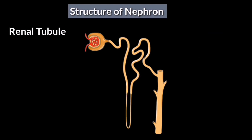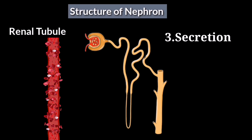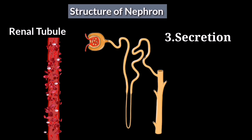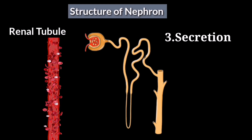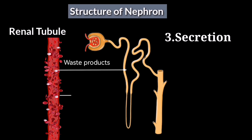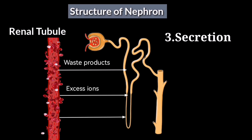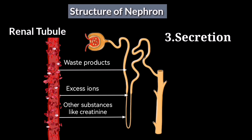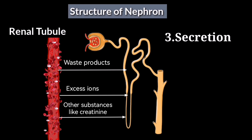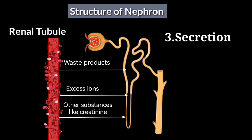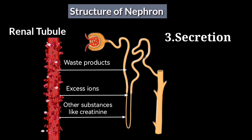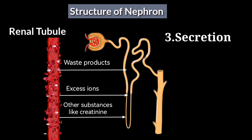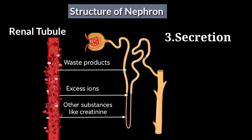After reabsorption, the remaining fluid in the renal tubule undergoes secretion. In this process, the renal tubule actively transports waste products, excess ions, and other substances from the bloodstream into the renal tubule, further concentrating the urine.